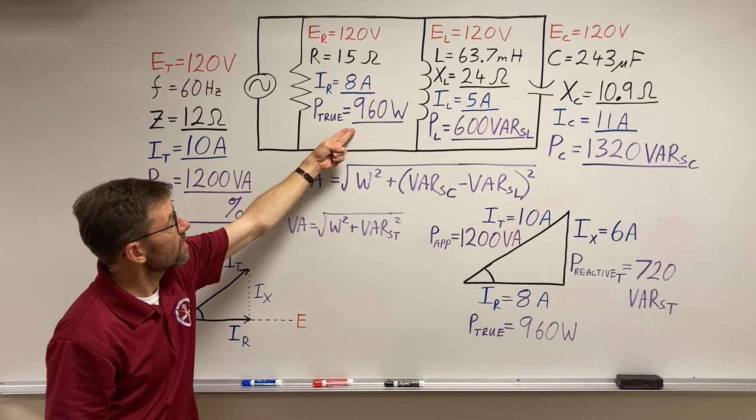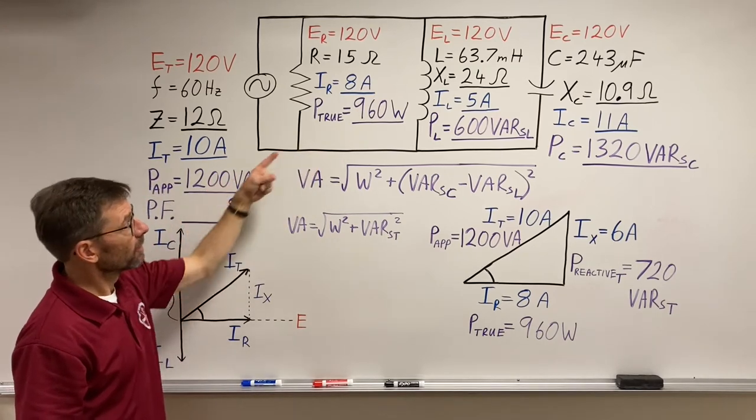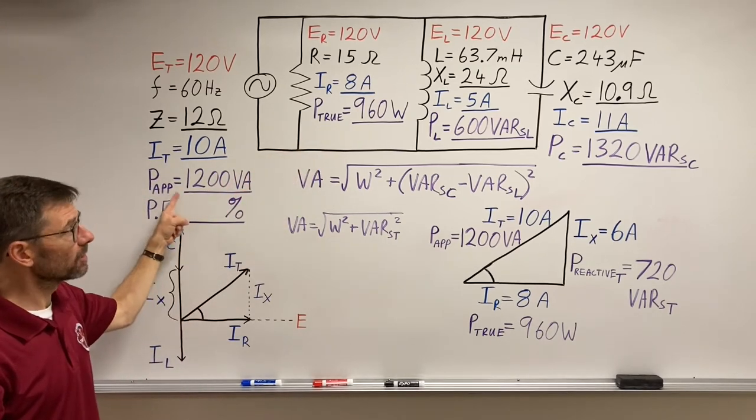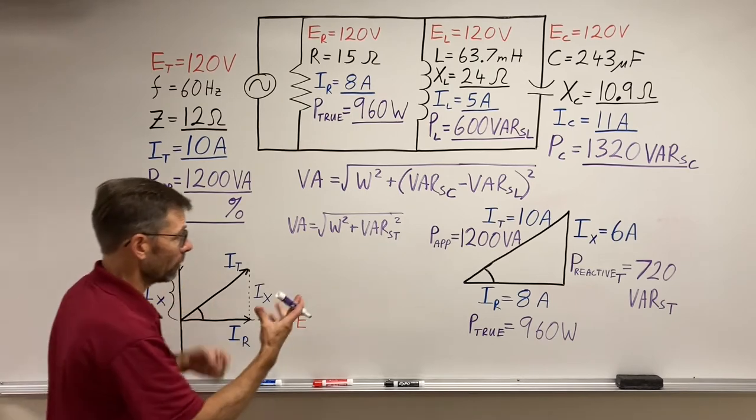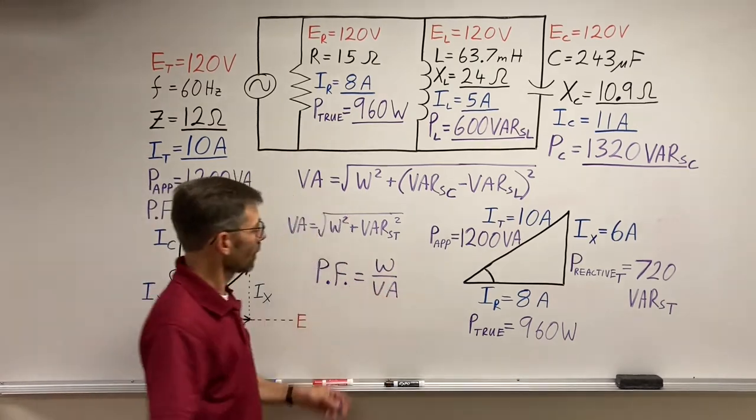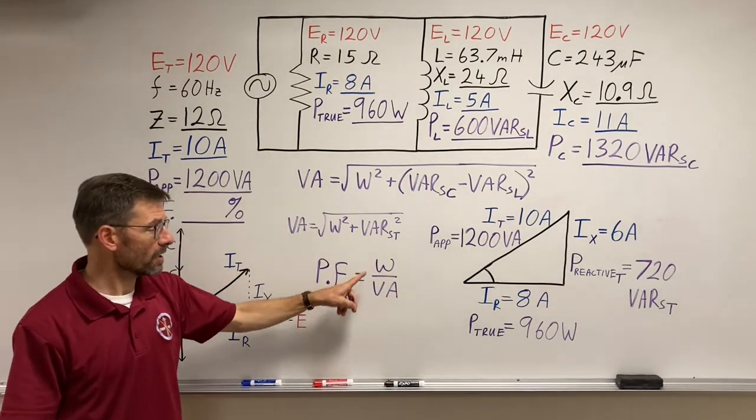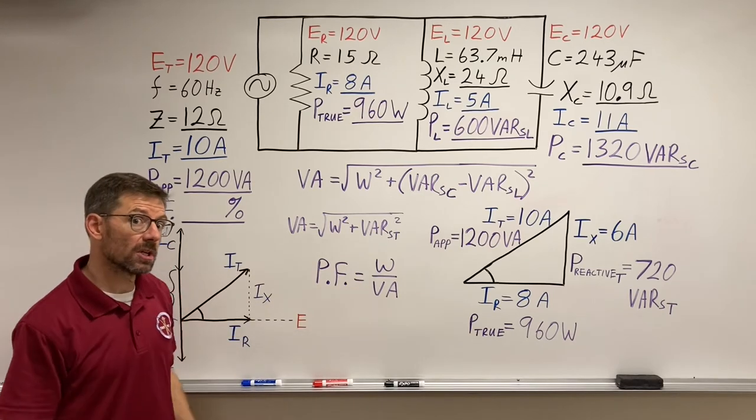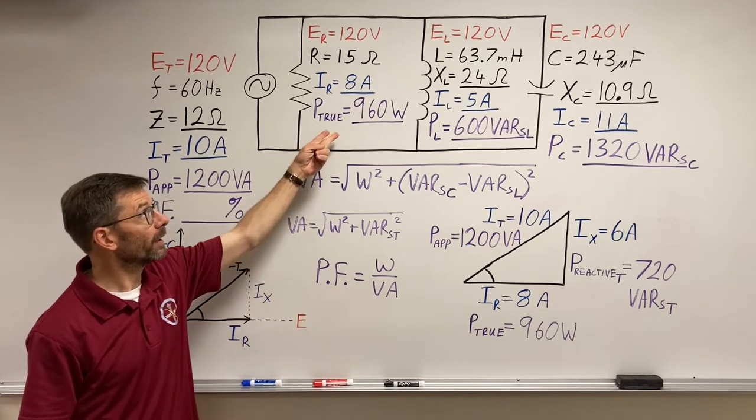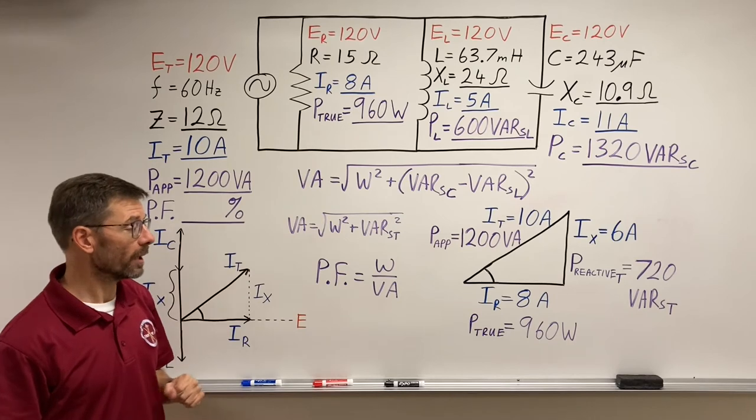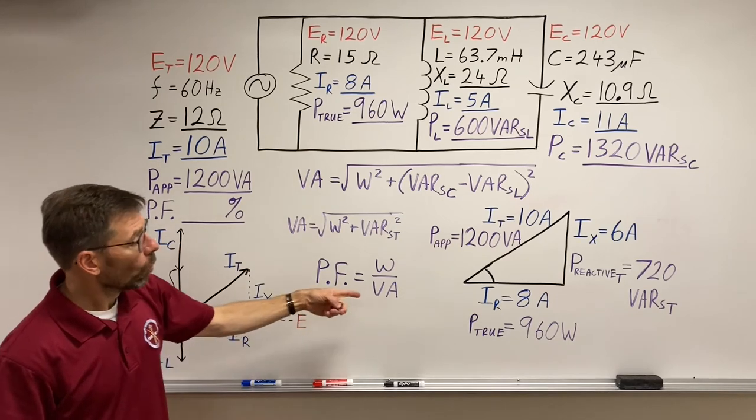So 960 divided by 1200, true power over apparent. Remember right here, it's our basic formula: watts over VA. How efficient is the circuit for giving me real work for what I'm putting into it?